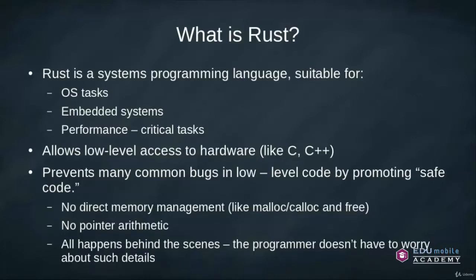Rust allows low-level access to the hardware like C and C++. Unlike C and C++ and many other fairly low-level languages, Rust will prevent many common bugs by promoting safe code, and it does this at compile time. We can declare a raw pointer, but we usually don't have to. There's no pointer arithmetic in Rust — all of it happens behind the scenes.